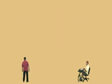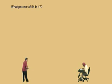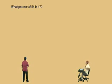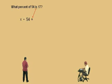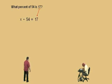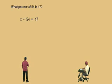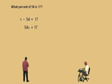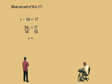Let's do another one. What percent of 54 is 17? Just relax, Charlie. Use the force. What percent — that's our x — of 54 is 17? There's your equation. Now remember, x times 54 is the same as 54 times x, which is 54x. So 54x equals 17. What do we do, Charlie? Divide both sides by 54. 54s cancel out and our answer as a fraction is 17 over 54.